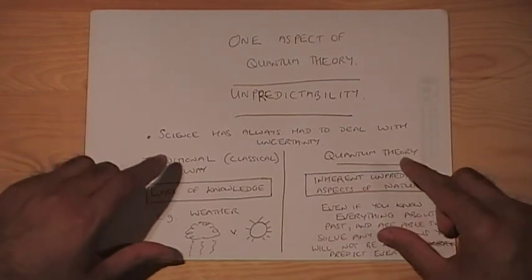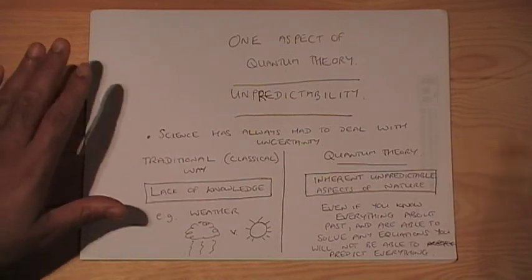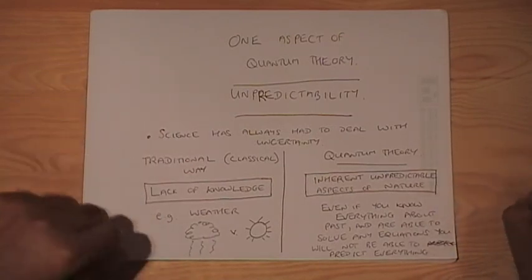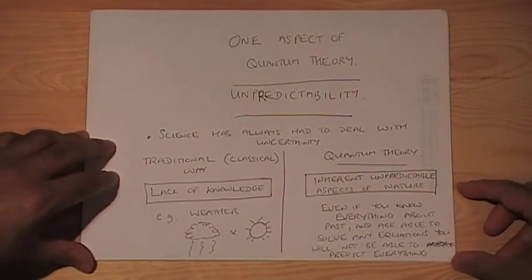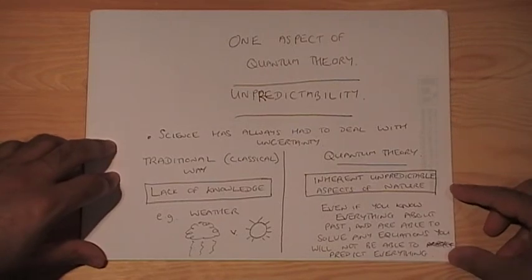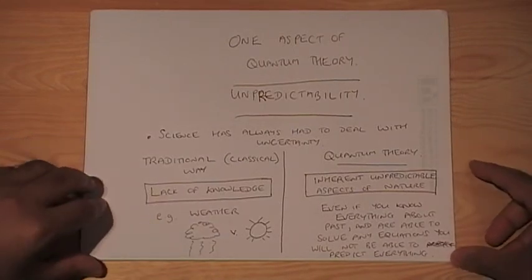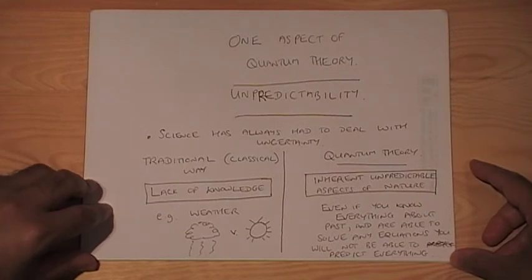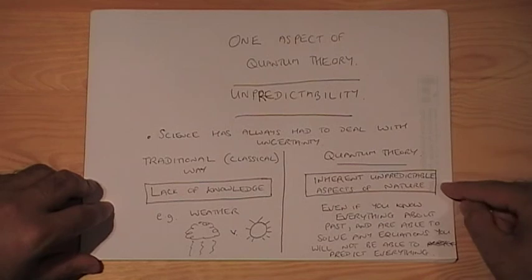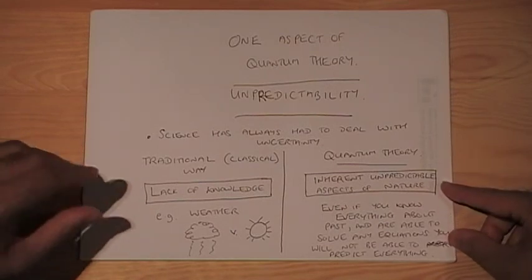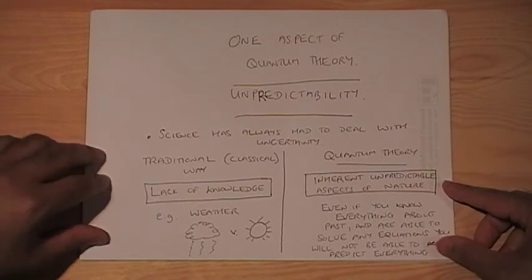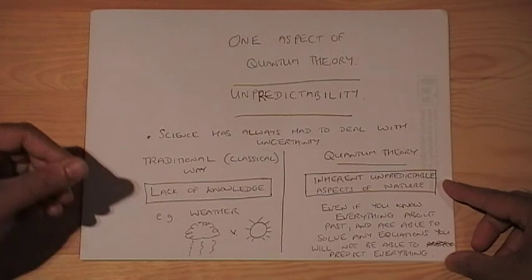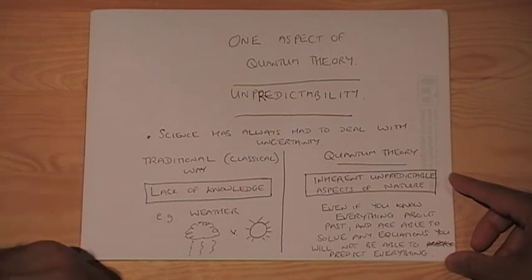And so this is perhaps one of the most profound differences between quantum theory and classical theory. And it's actually one of the things which has caused us the most soul searching and difficulty. And in fact, a lot of the research that goes on in quantum theory today is aimed at trying to understand exactly in what ways quantum theory writes inherent unpredictability into nature and in what situations we can interpret the unpredictability of nature as being down to a lack of knowledge.